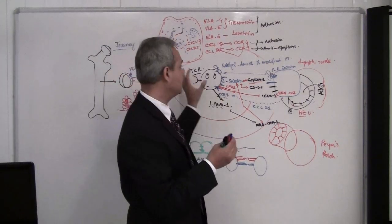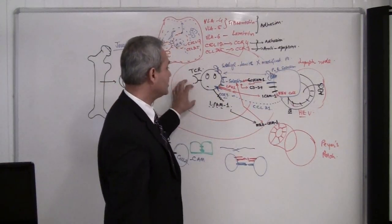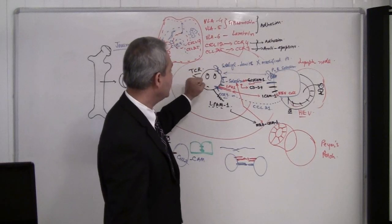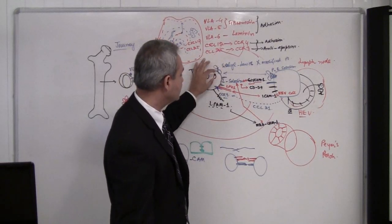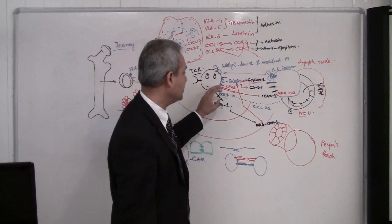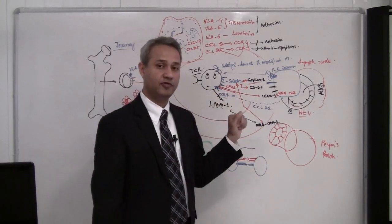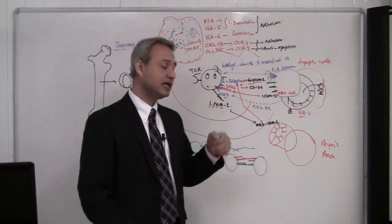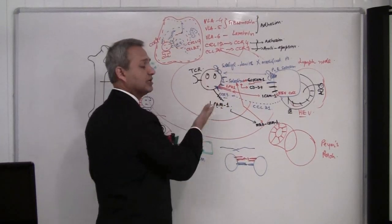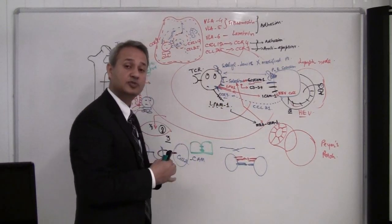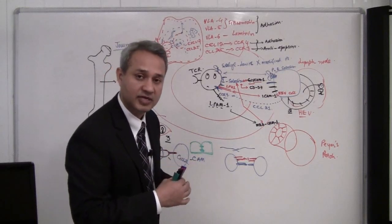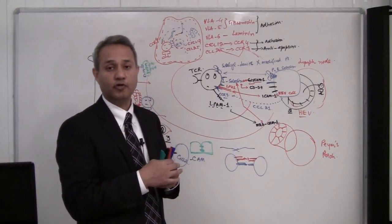It's very simple now if you keep this track here. Now this T cell should take the expression of these L-PAMs and the L-selectins which are specific to glycam and the CD34s, it needs to take them out. It needs to unexpress them. And it needs to express what? Now it would express LFA1 and VLA4.